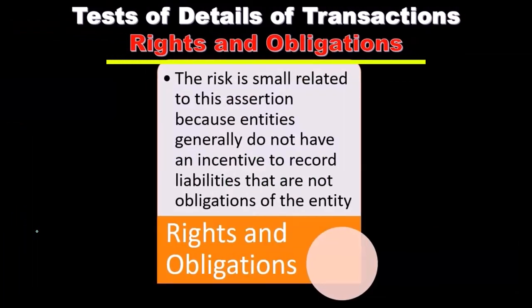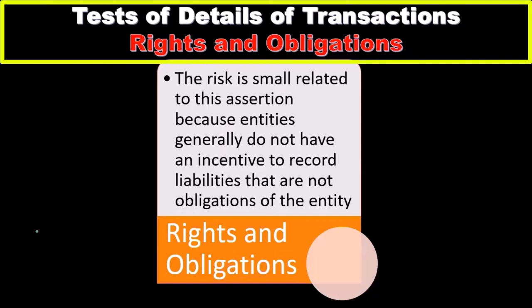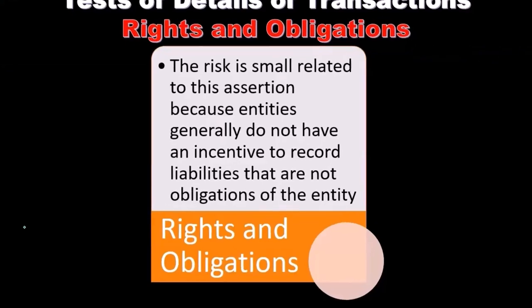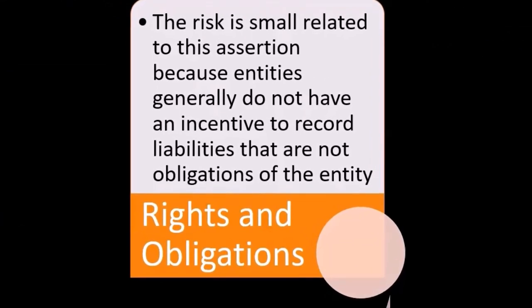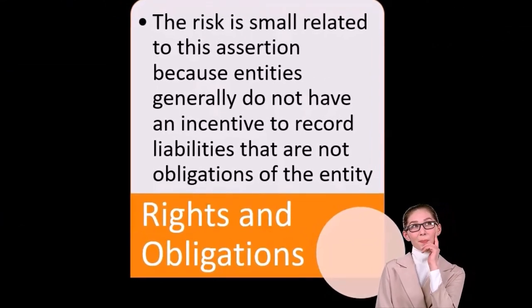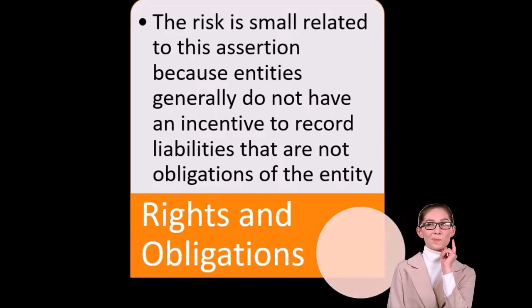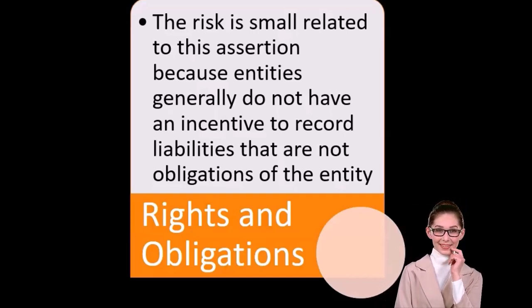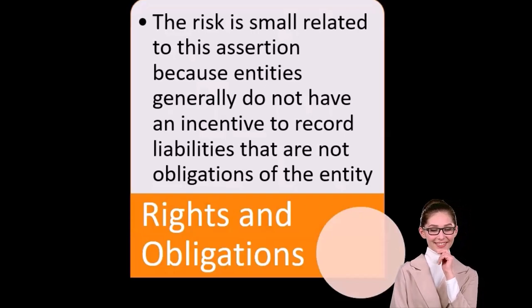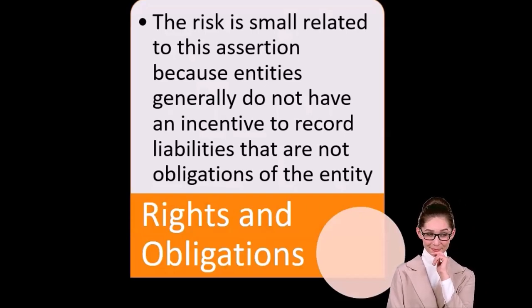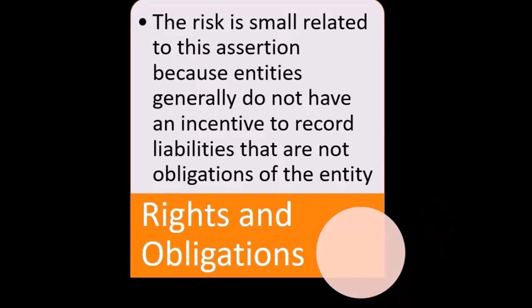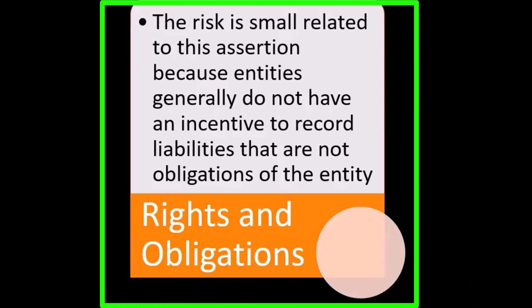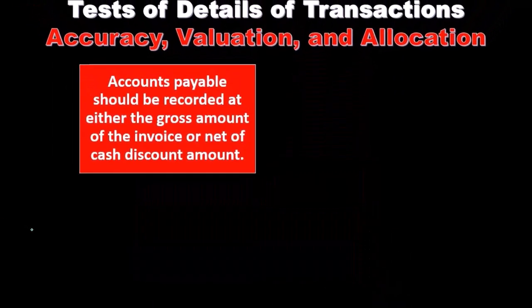For the assertion of rights and obligations, the risk is small because entities generally do not have an incentive to record liabilities that are not obligations of the entity. Since a company would not typically try to look worse by overstating liabilities, rights and obligations is not as high a priority assertion for accounts payable.